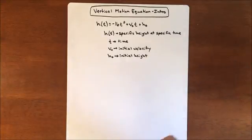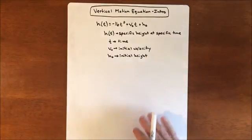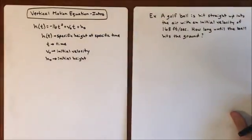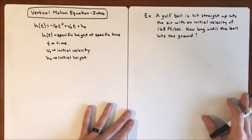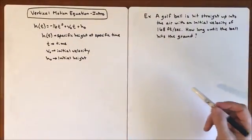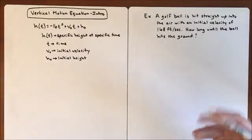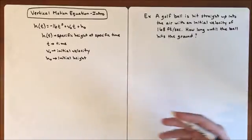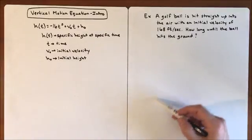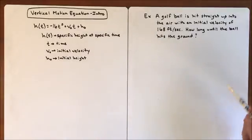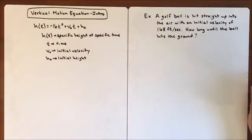H with a subscript of 0 is your initial height. So let's see how this is used. We have an example: a golf ball is hit straight up into the air. Again, that's the key — it's hit vertically. It's not hit onto a green or anything; it goes straight up into the air with an initial velocity of 168 feet per second.